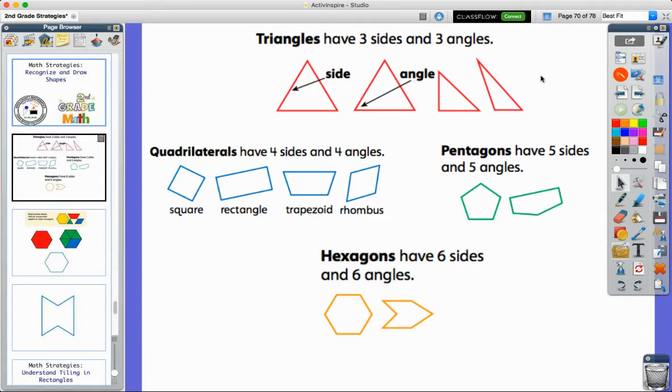Triangles - hopefully you know this from kindergarten or even before - have three sides and three angles. We start to talk about what a side is; those are the long lines that make up the shape. The angles are the places where the lines come together. So in a triangle, there are three sides and three angles.